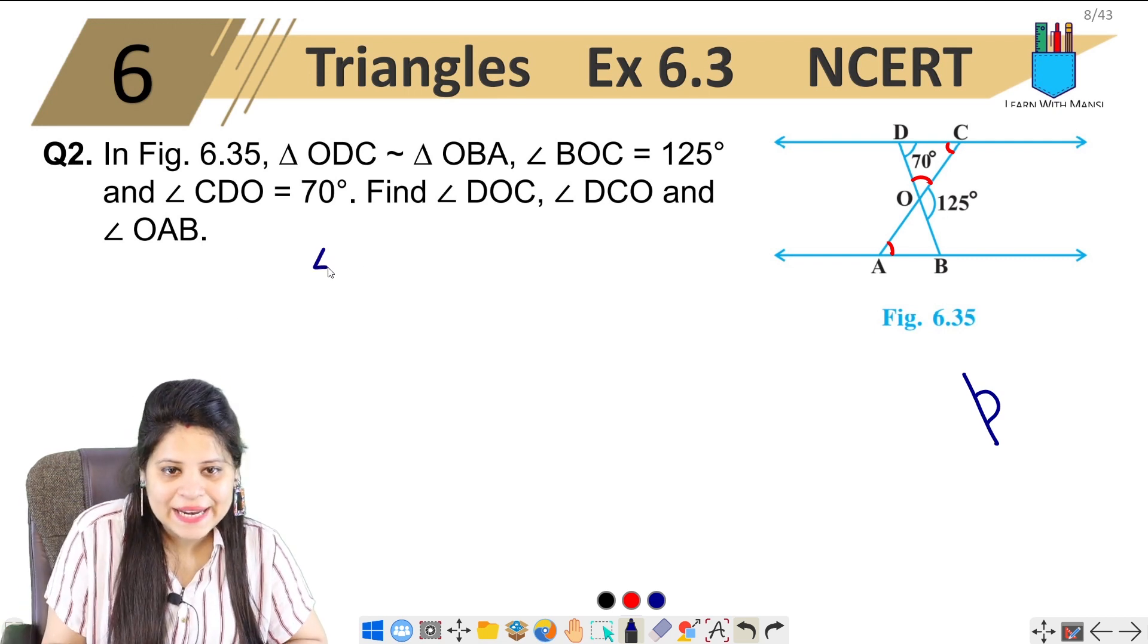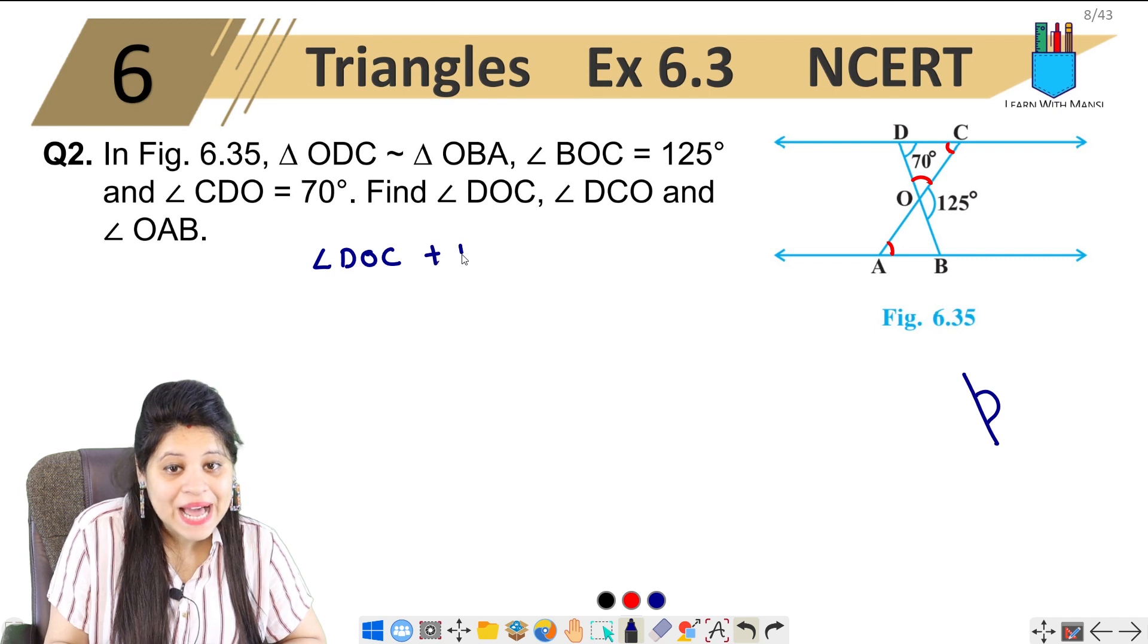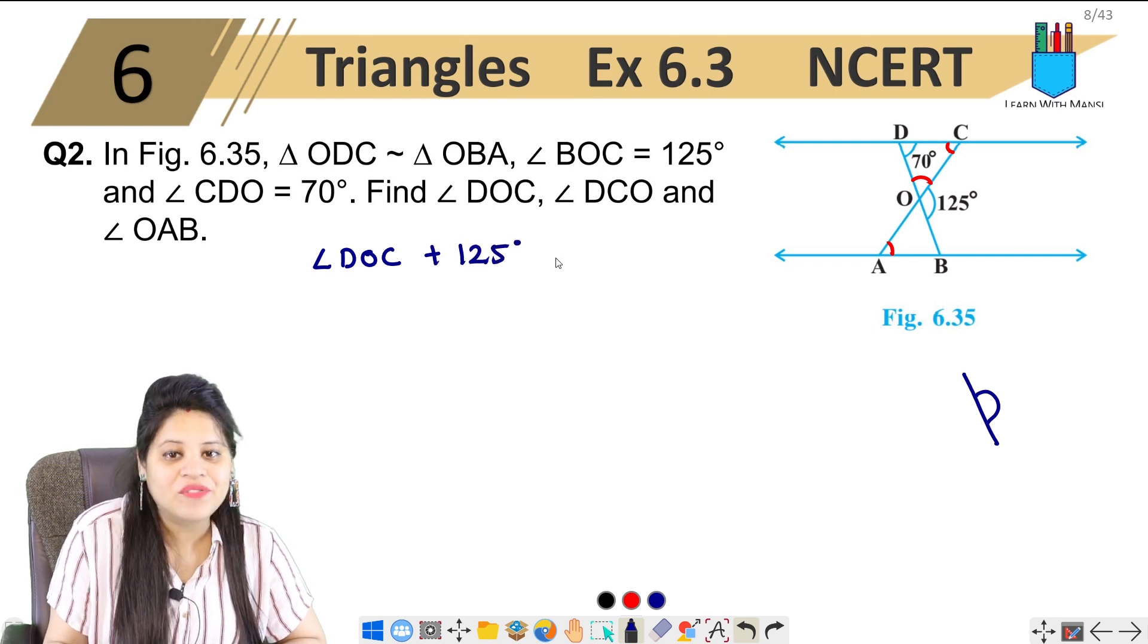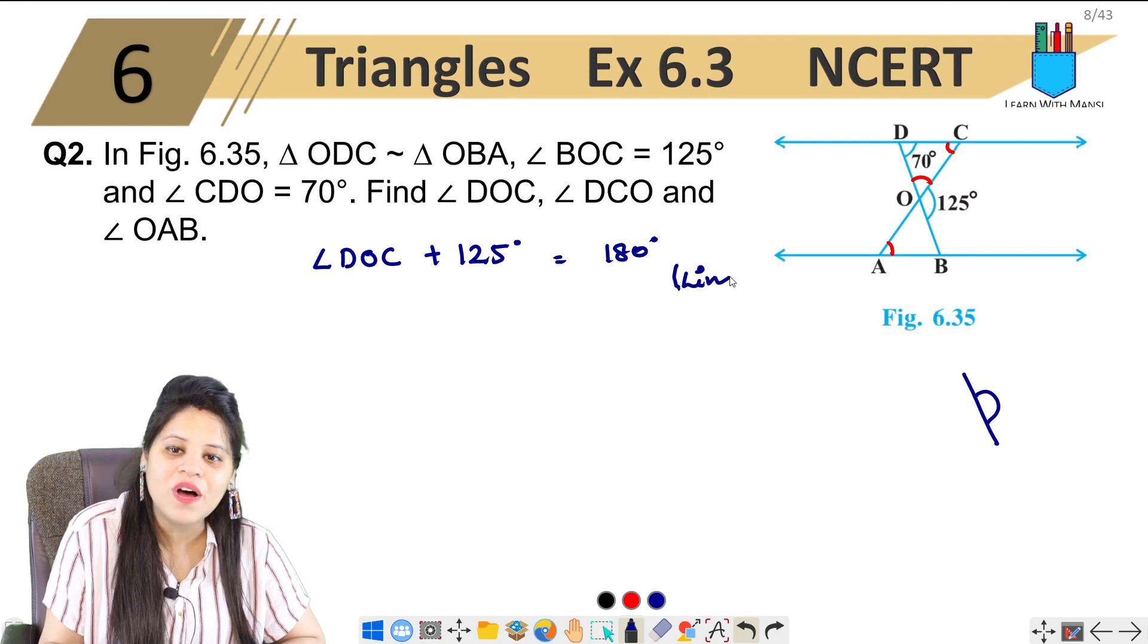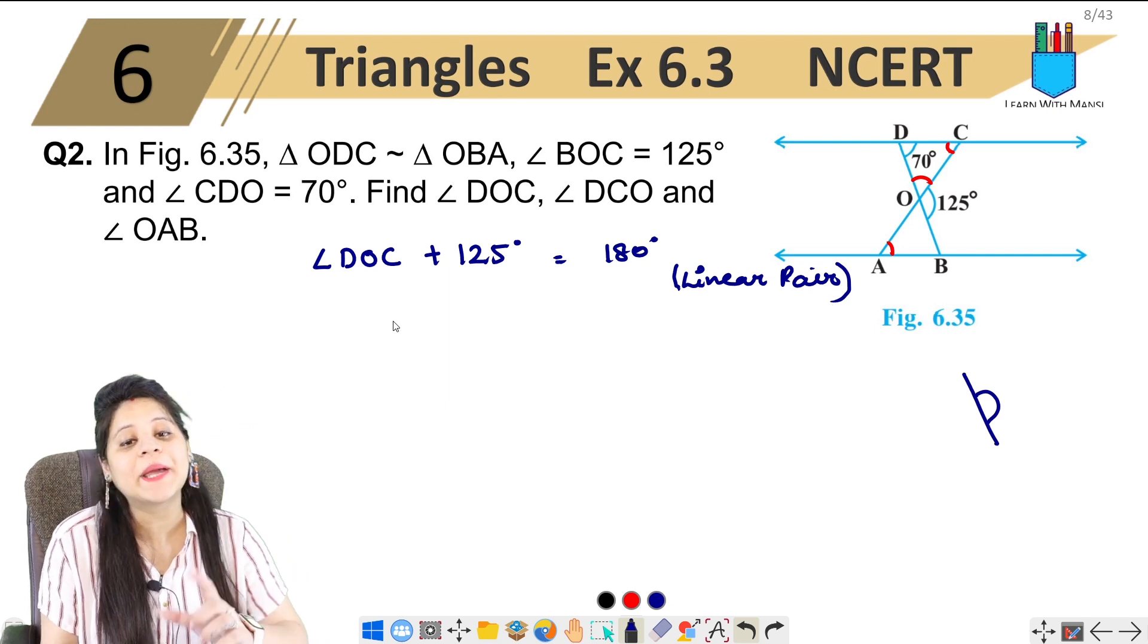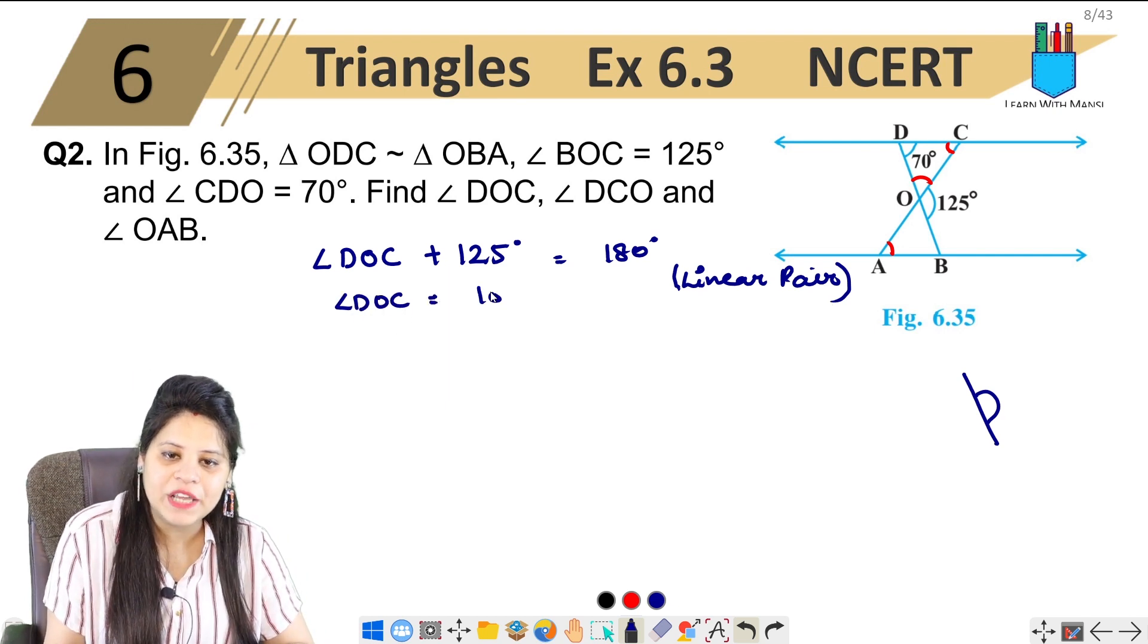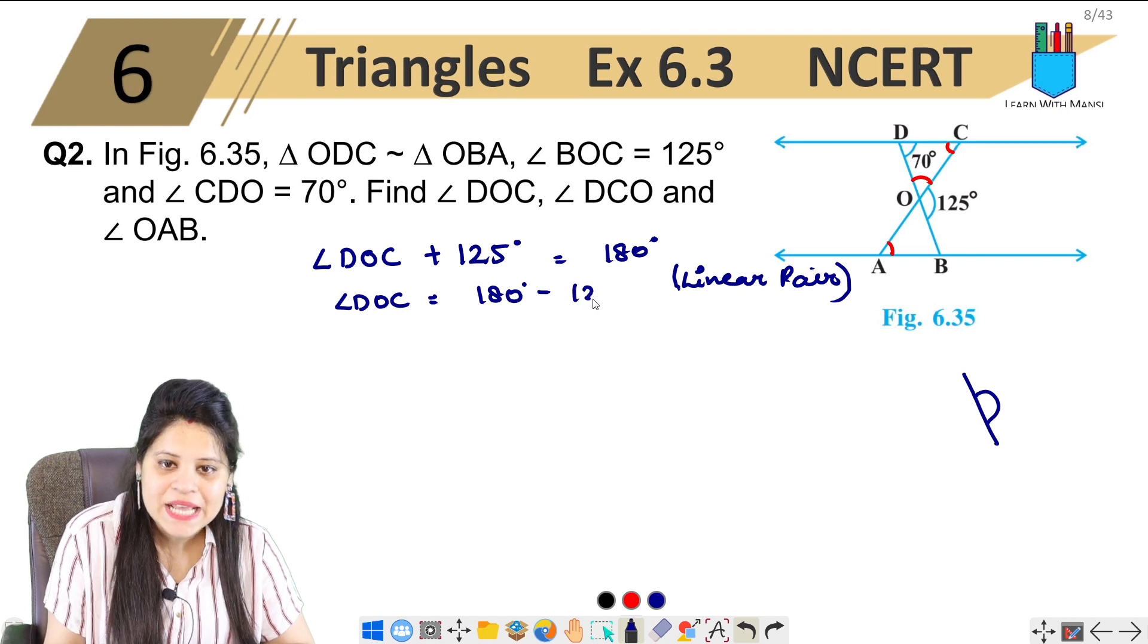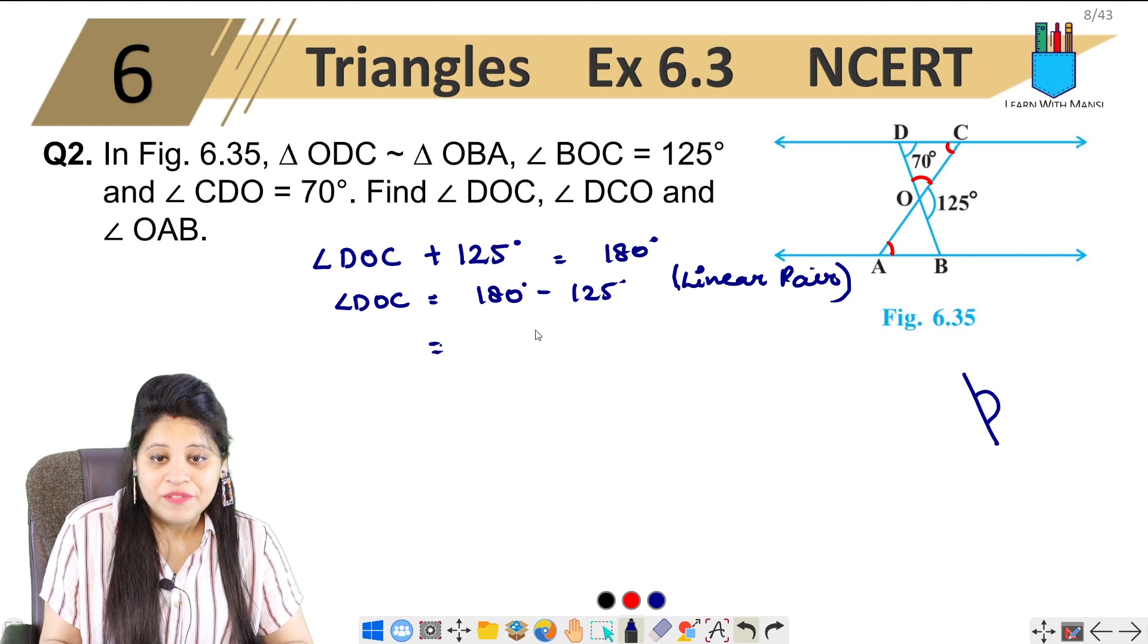So I can write angle DOC plus 125 degrees equals 180 degrees. Why? Because of linear pair. Linear pair is 180 degrees. So angle DOC will be 180 degrees minus 125 degrees.